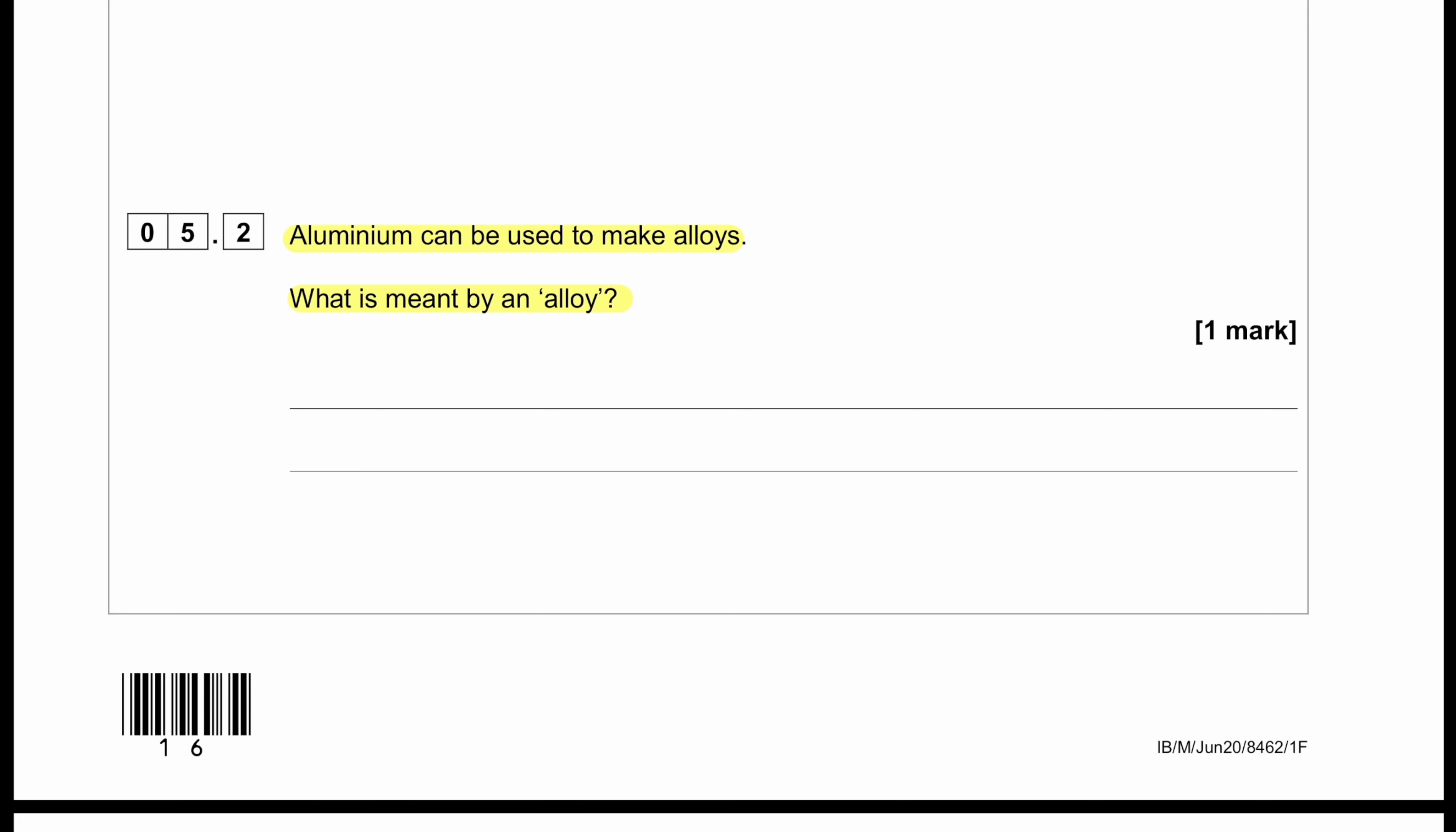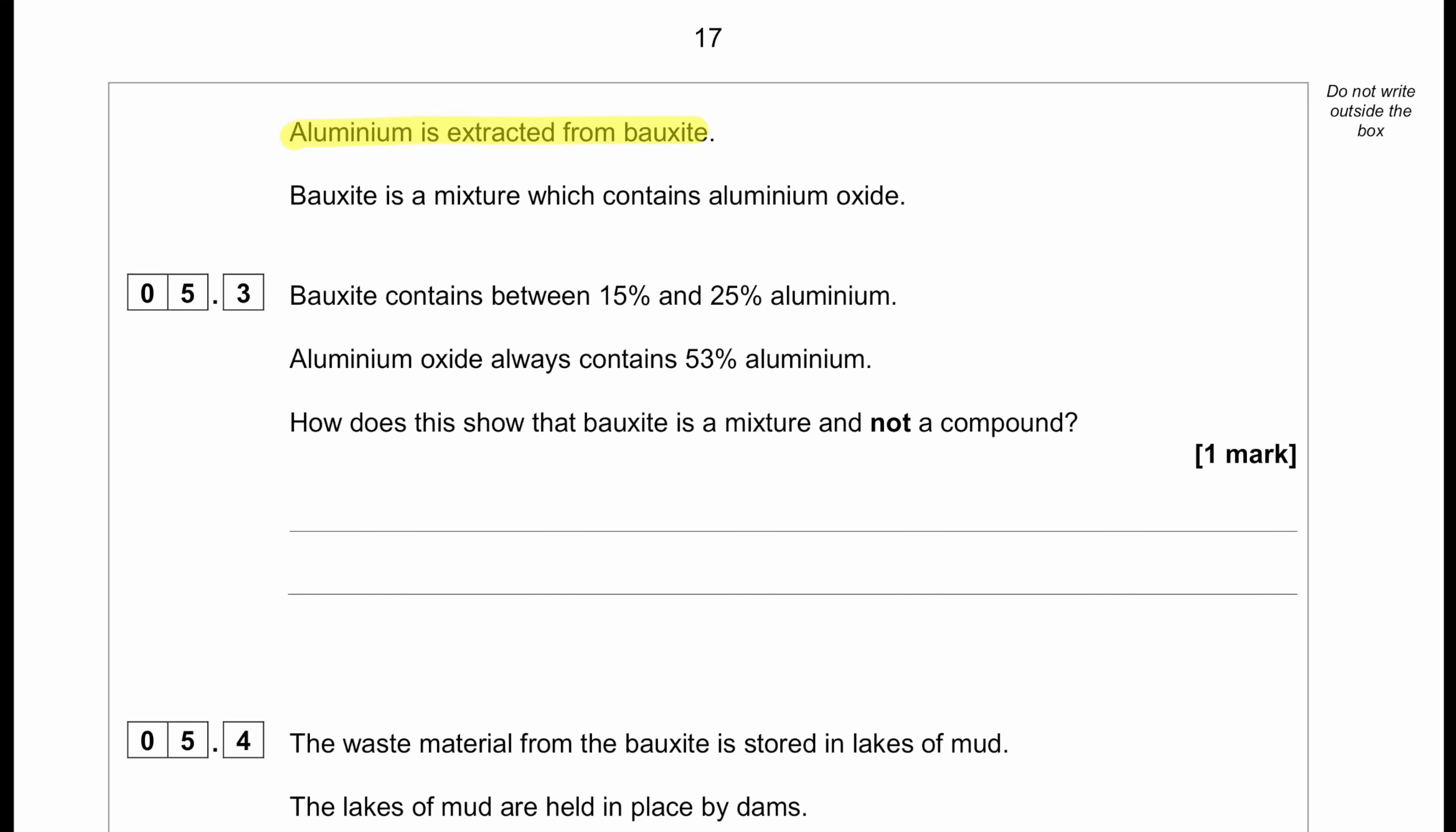Aluminium can be used to make alloys. What is meant by an alloy? Well, whenever we get a question for alloy, alloy is a mixture of metals.